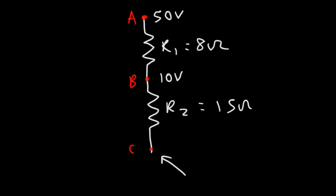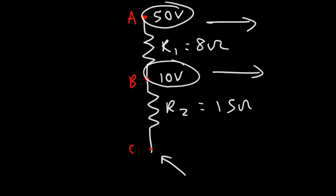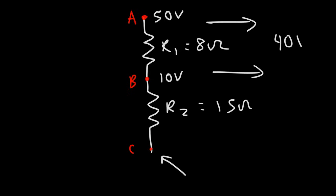The first thing we need to do is calculate the voltage drop across R1, which is the difference between the electric potential at point A and point B — the potential difference between those two points. So it's 50 volts minus 10 volts, which is 40 volts. That is the voltage across R1.